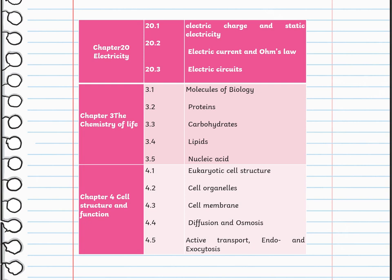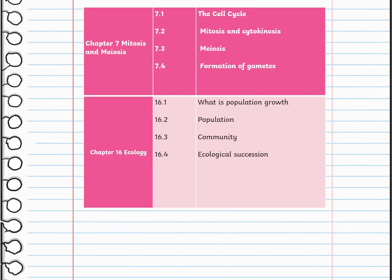Then we are going to talk about cell structure and function — the eukaryotic cell structure, cell organelles, cell membrane, diffusion and osmosis, active transport, and endocytosis and exocytosis. We will also cover mitosis and meiosis, the cell cycle, mitosis and cytokinesis, and meiosis and formation of gametes.